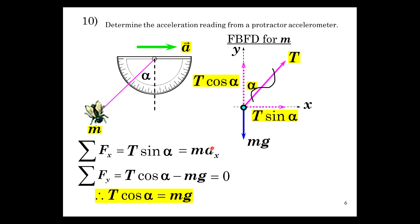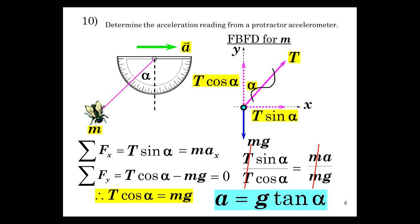T's go away, m's go away, and we have the coveted result. A is g tangent of theta.